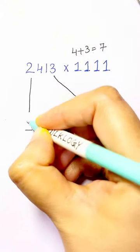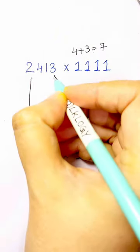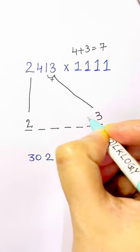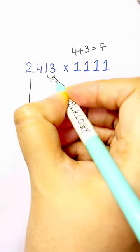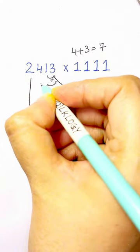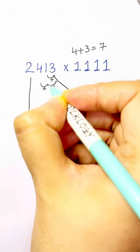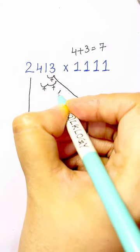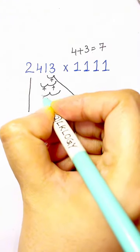Now just keep on adding: 3 plus 1, that's 4. Next is 3 plus 1 plus 4, so 4 plus 4, that's 8. Next, keep on adding: 3 plus 1, 4, 4 plus 4, 8, 8 plus 2, that's 10. So zero, carry one.